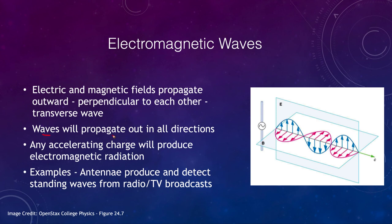The waves propagate out in all directions. Electromagnetic radiation can be produced in a couple of ways — from a current in a wire, but also by accelerating charges. Remember that acceleration can mean speeding up, slowing down, or changing direction. So as charges change direction — such as in an alternating current, or moving in a curved path — even without speeding up or slowing down, that change in direction will also produce electromagnetic radiation.